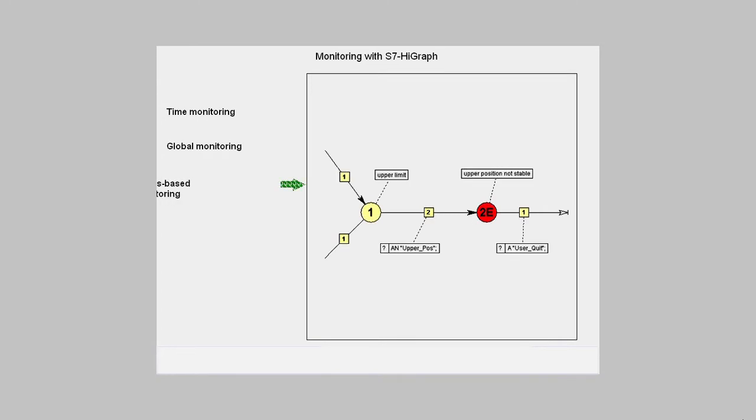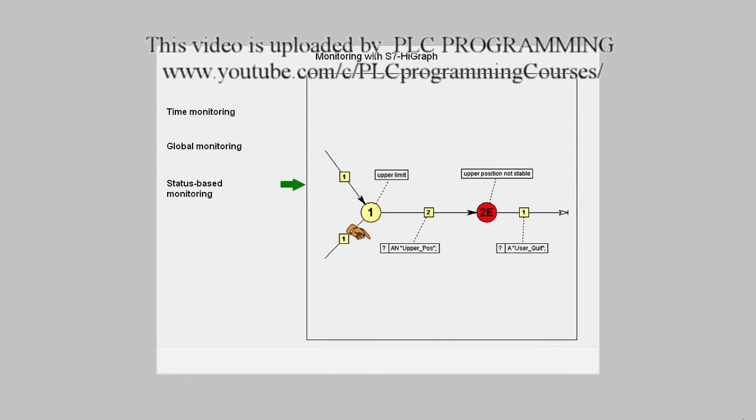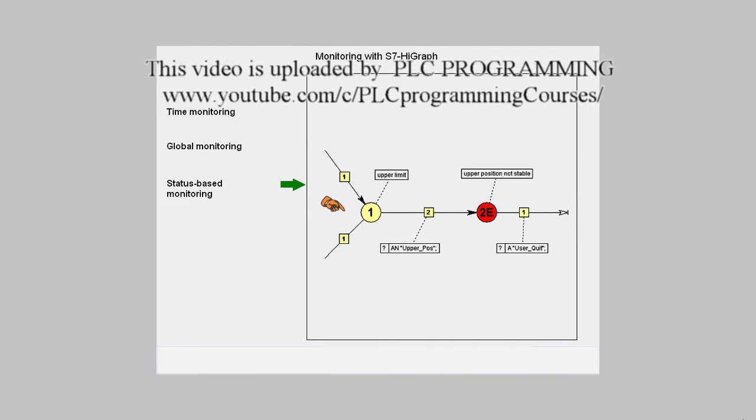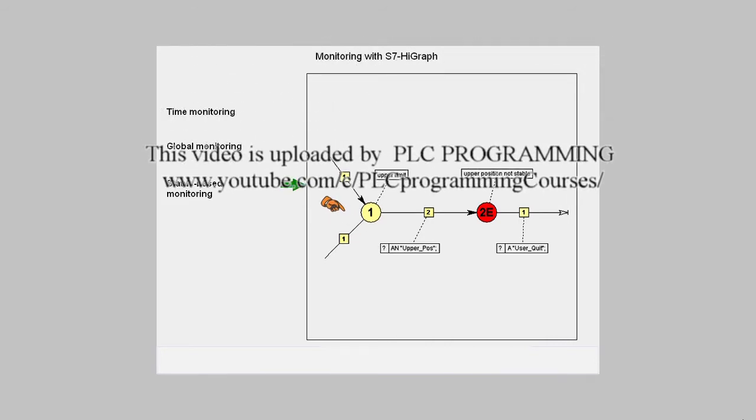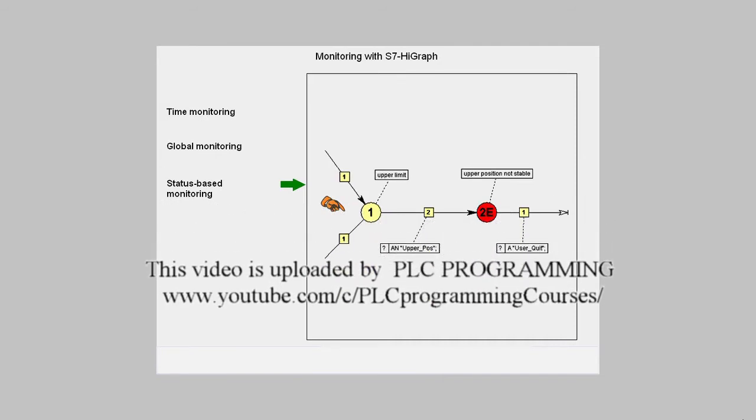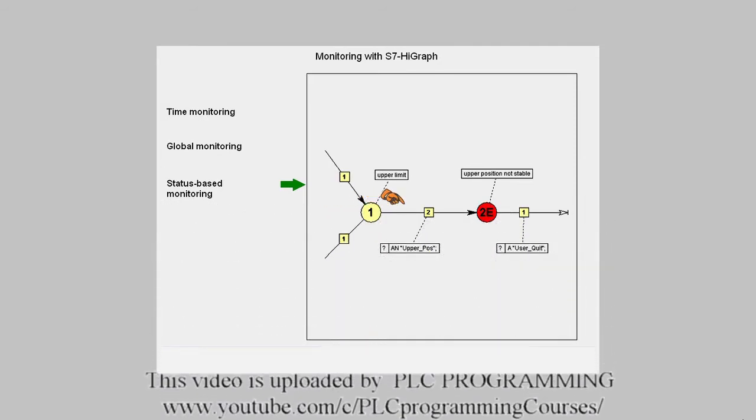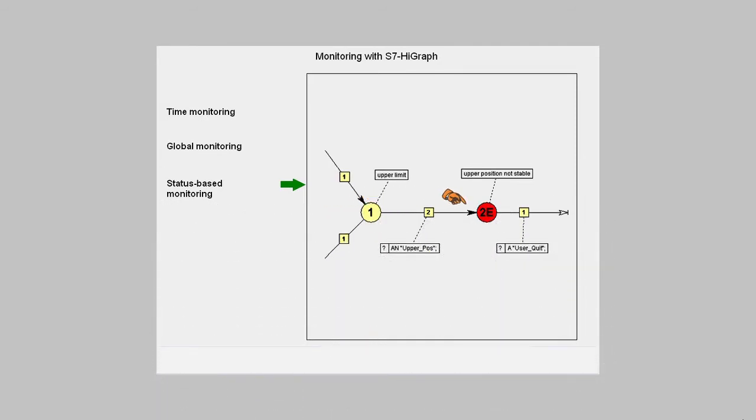State dependent monitoring is when a signal is to be monitored only when it is in a particular state. In the program, the conditional transition then comes from the monitored state and leads into the fault state.